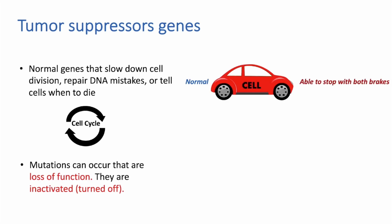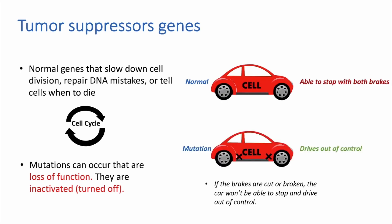For example, tumor suppressor genes can be thought of as genes that control the brakes. If a normal cell has these genes, then it is able to stop. However, if a loss-of-function mutation occurs in the brakes and they are cut or broken, then the car won't be able to stop and will drive out of control. The safety measures, or tumor suppressor genes, help keep a car controlled, and if they are lost, then it is more likely that the cell will head towards a destructive cancerous process.